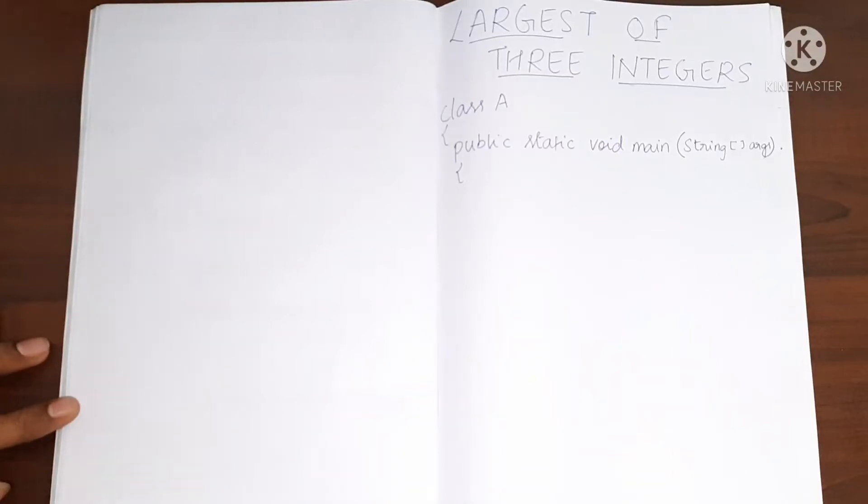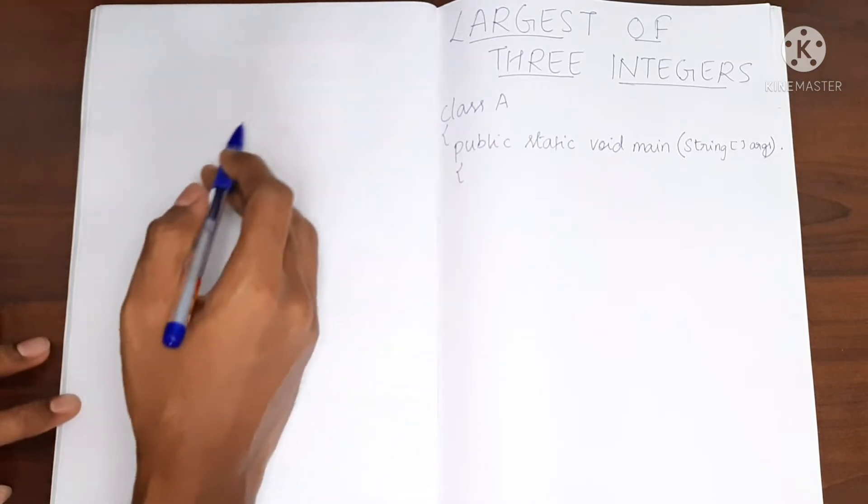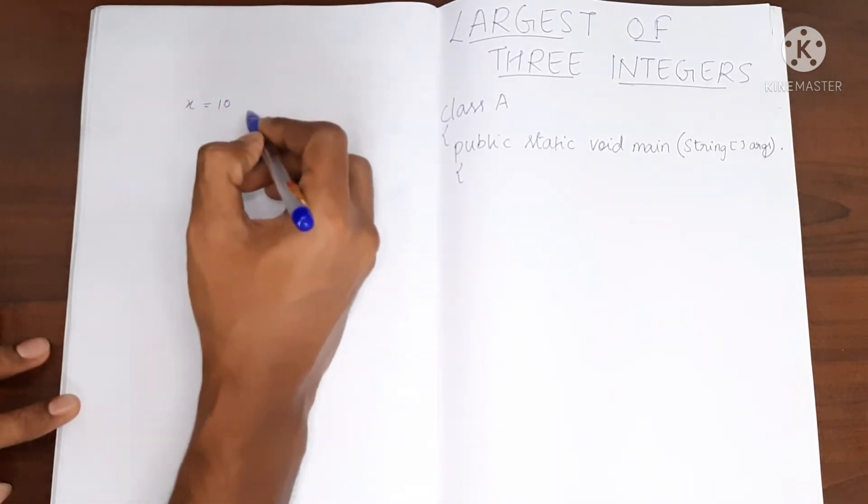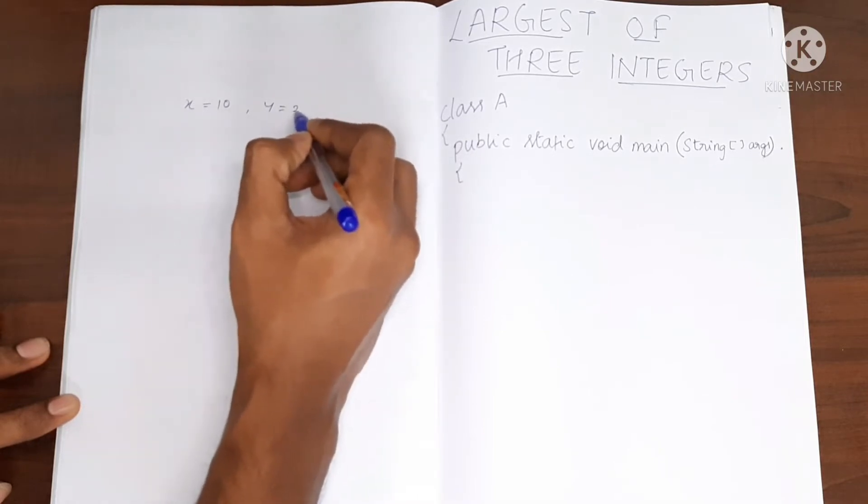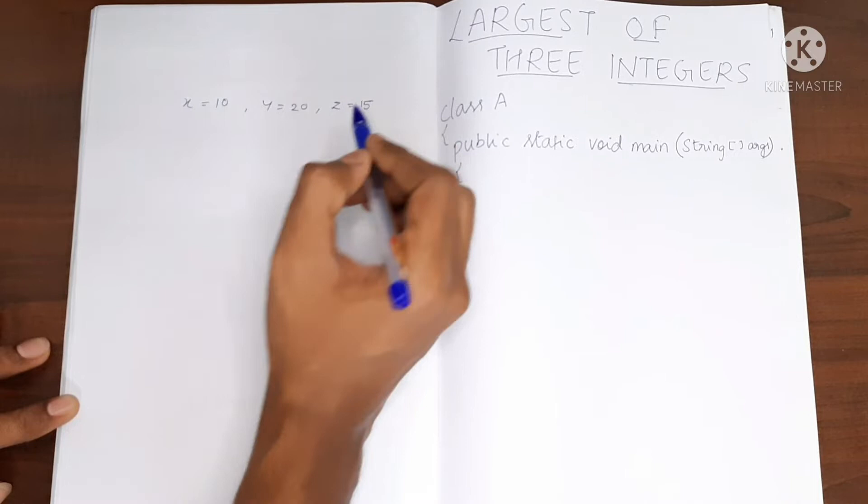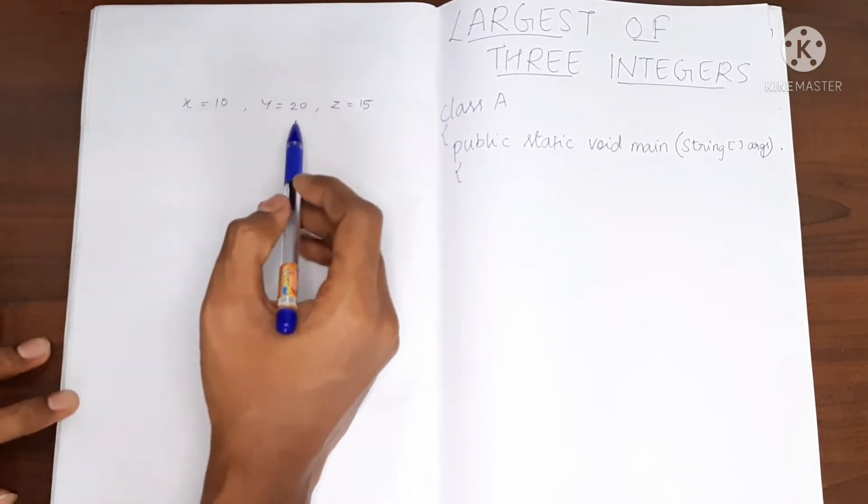Hello, today I will teach you how to find the largest of any three numbers. Let's say we have number x as 10, y as 20, and z as 15. We have to find out which among these three numbers is the largest one.